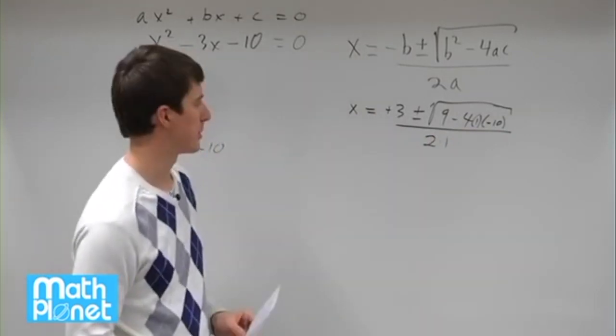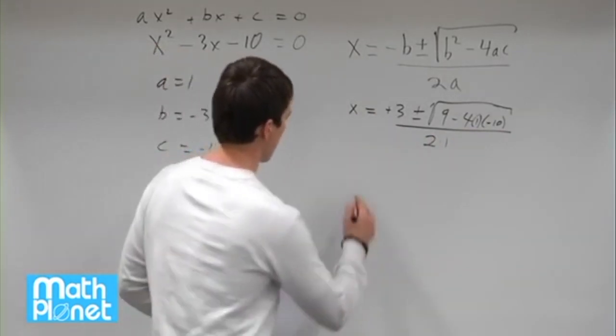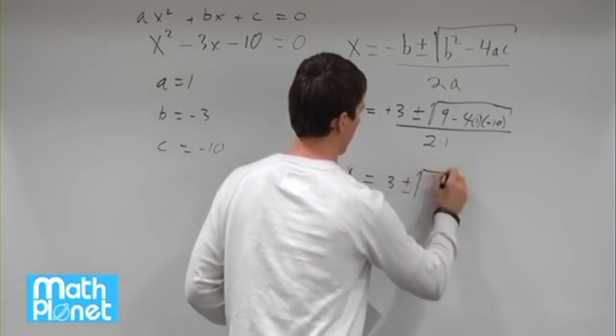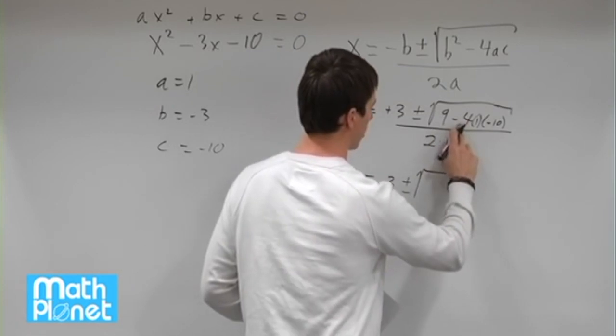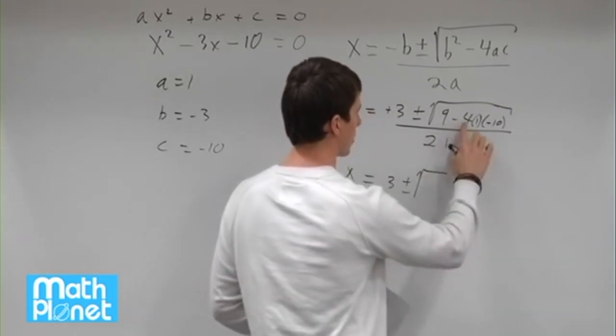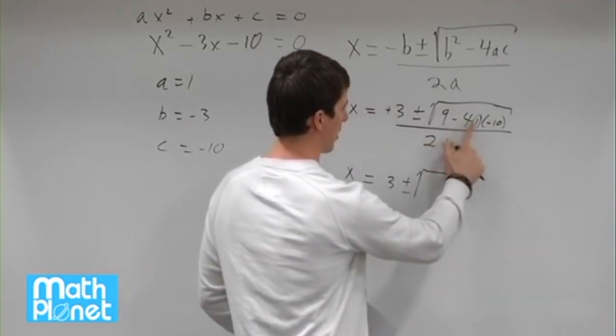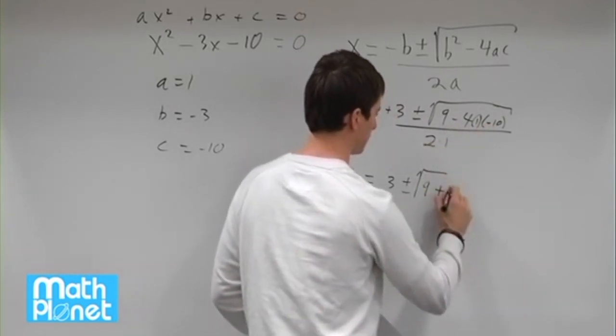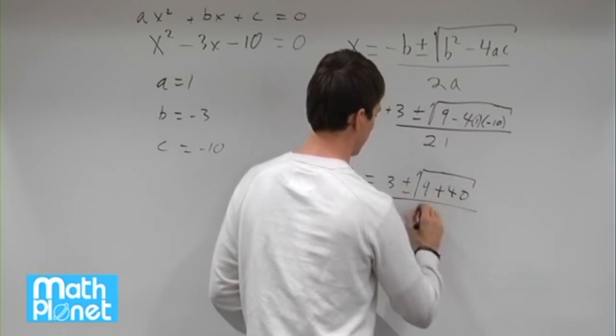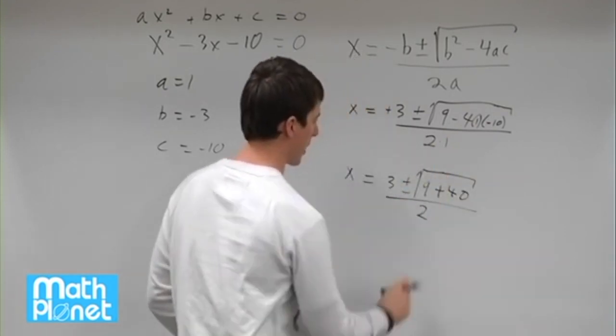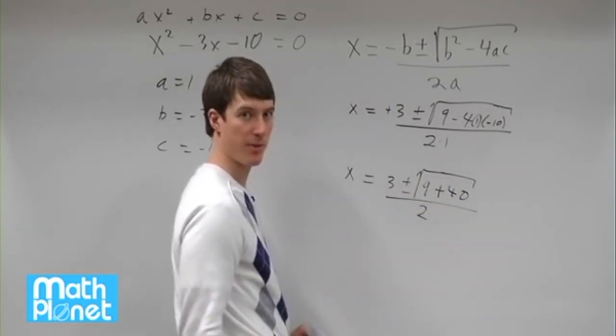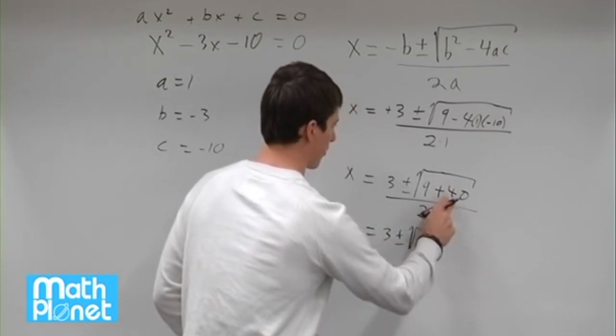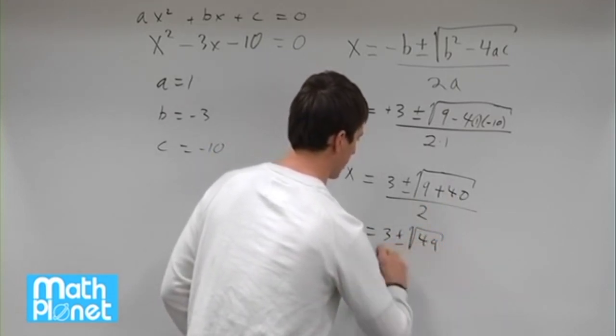Just numbers, just a little arithmetic, and we'll get two answers out. Let's start simplifying. We have x equals 3 plus or minus the square root of—now what do we have under here? We had 4 times 1 is just 4, 4 times negative 10 is negative 40, and then we have 2 negatives so that comes out to be positive. So 9 plus 40 all over 2. So 2 times 1 is just 2. So x equals 3 plus or minus the square root of 40 plus 9 is 49 over 2.